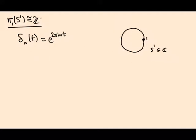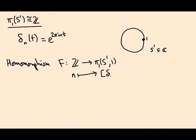So the way I want to proceed is to write down a homomorphism F from the integers to the fundamental group of the circle based at the point 1. This is going to be the map that sends n to the homotopy class of delta n. So we need to check this is a homomorphism. We also need to check that F is injective and that F is surjective. And that will tell us what we need to know, that it's actually an isomorphism.